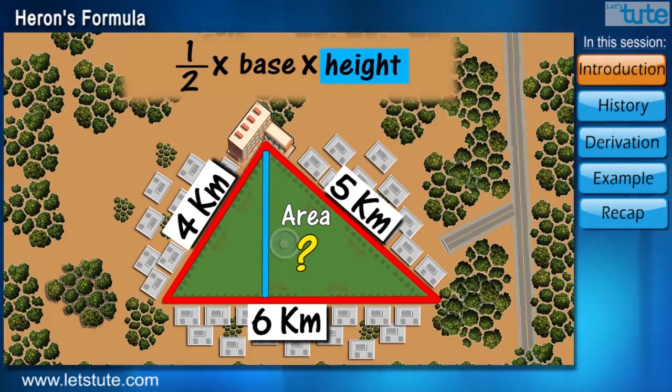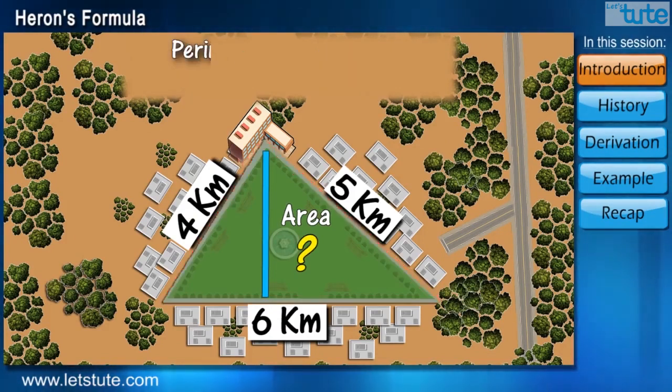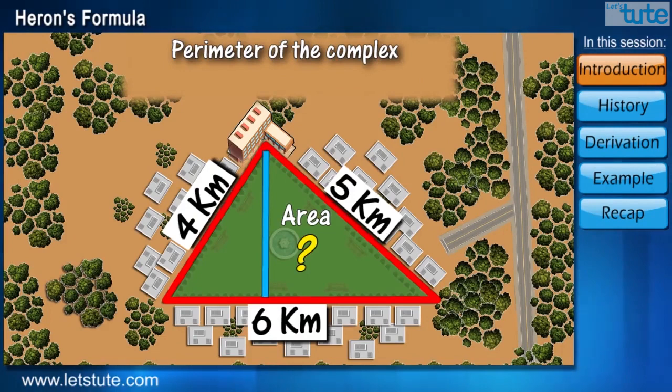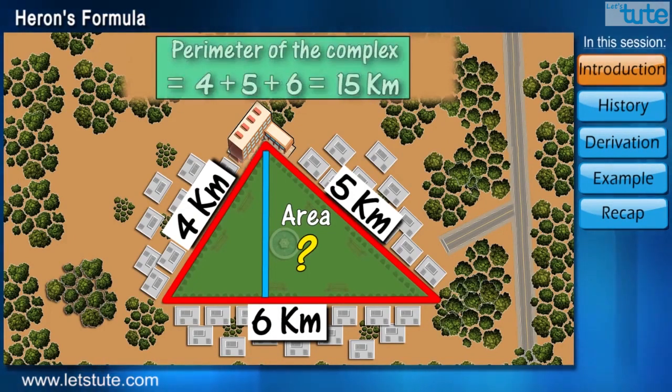But with the given information, we can calculate the perimeter of the complex which is nothing but the addition of all the sides. Why are we doing this? You will come to know in the later part of the session.